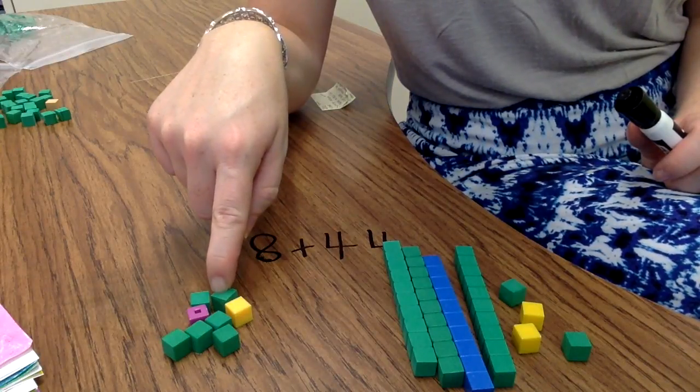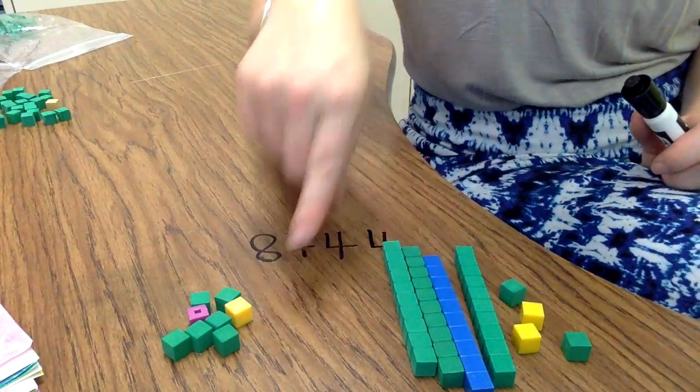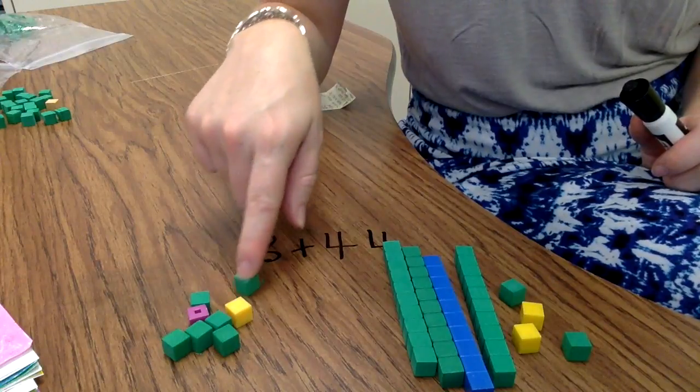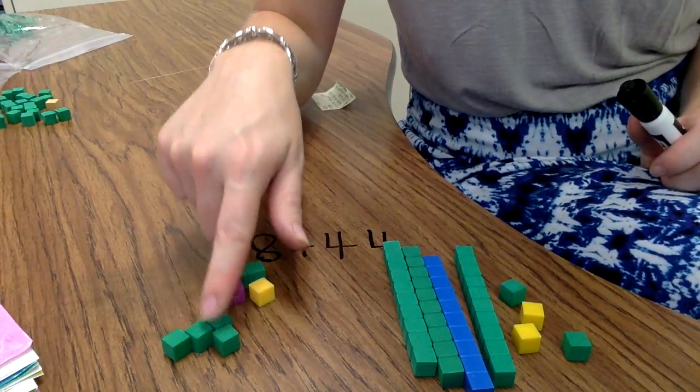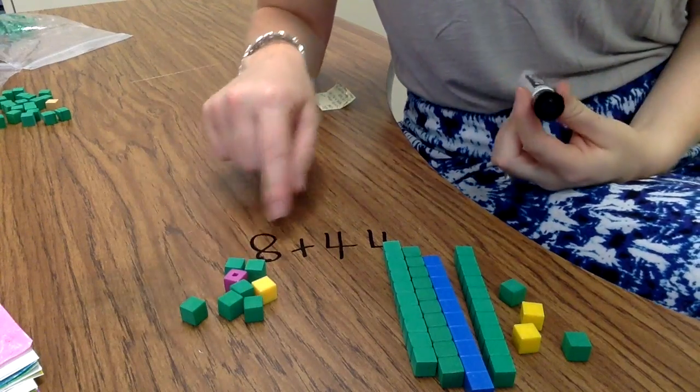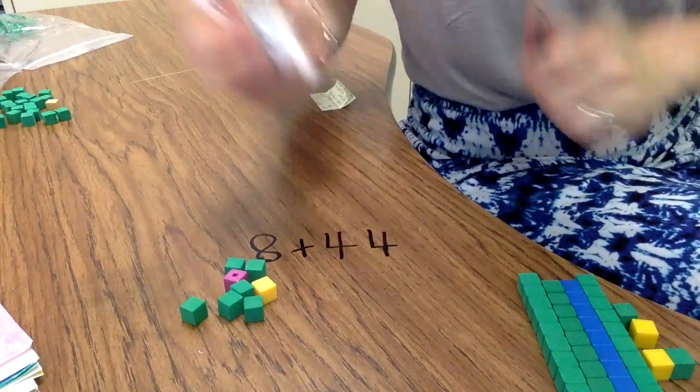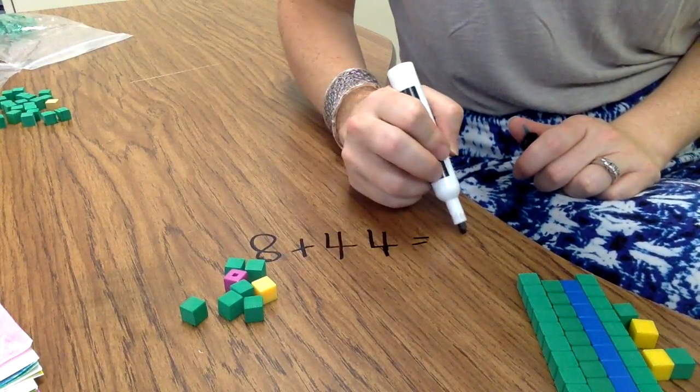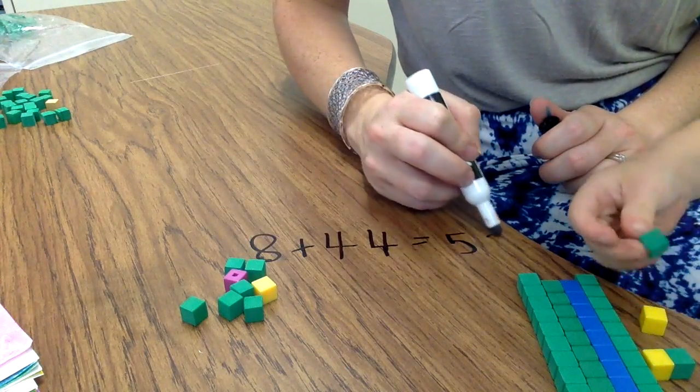We also ask kids to double check their count. So I'm going to do it one more time. I know this is 44, 45, 46, 47, 48, 49, 50, 51, 52. So I know that 8 plus 44 has a sum of 52.